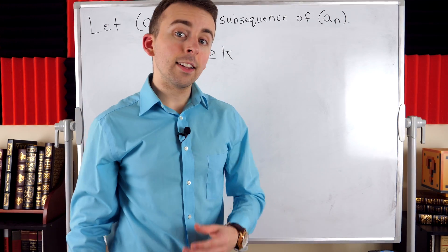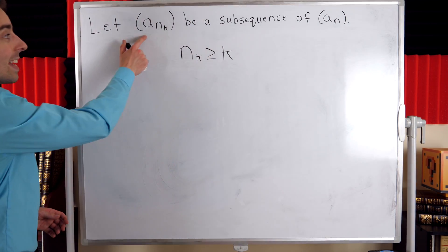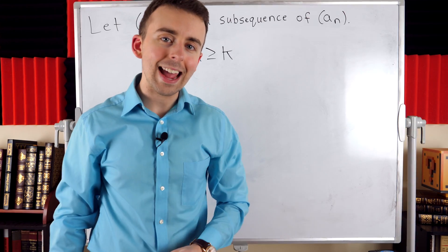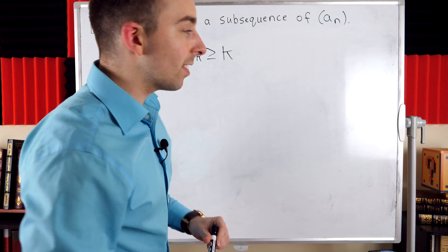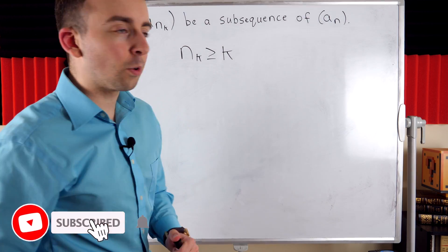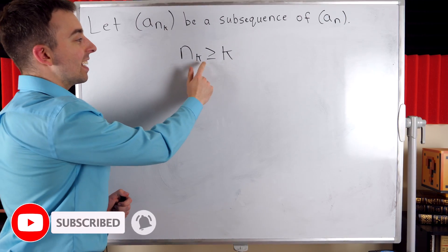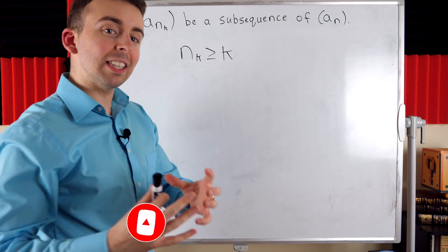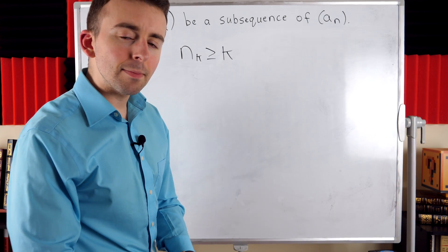Suppose a_n is a sequence and a_{n_k} is a subsequence of a_n. The whole point of this lesson is to explain this simple but important inequality: n_k is greater than or equal to k.